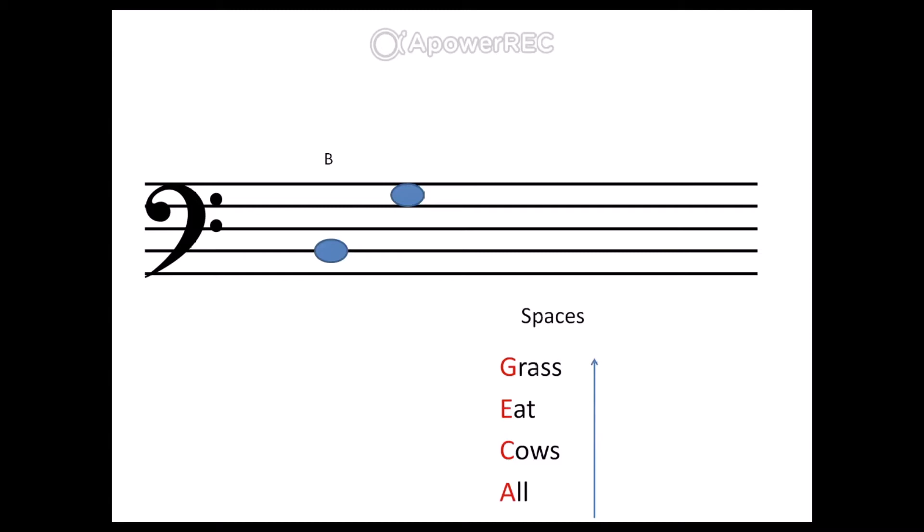I can also see that it's in the fourth space up, so using our rhyme I count from the bottom: All Cows Eat Grass, and I know that this note is a G.